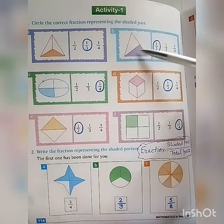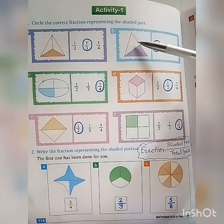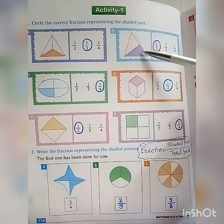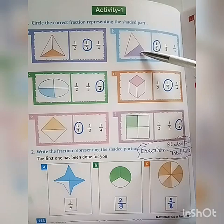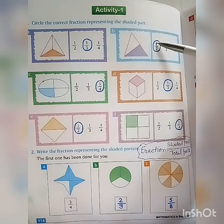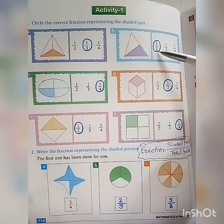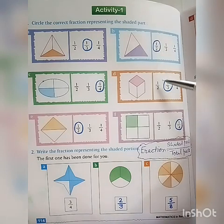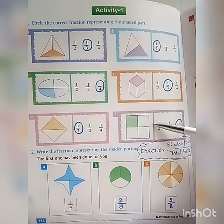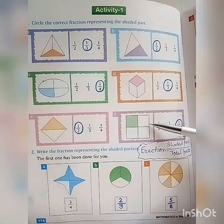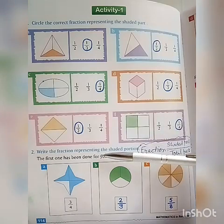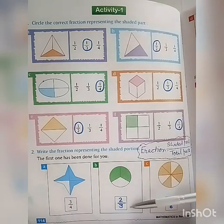In part B, this triangle has only two parts and one part is shaded. First we write down the shaded part and then the total parts, so the option one upon two is correct. Students, you can do this question yourself. In the second question we have to write down the fraction.